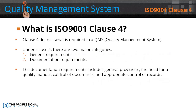What is ISO 9001 Clause 4? Clause 4 defines what is required in a QMS — quality management system. Under Clause 4 there are two major categories: general requirements and documentation requirements. The documentation requirements include general provisions, the need for a quality manual, control of documents, and appropriate control of records.